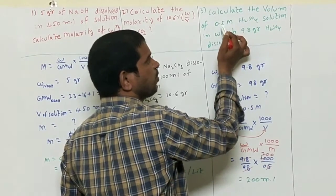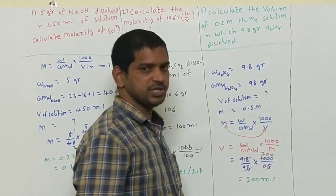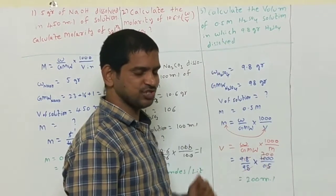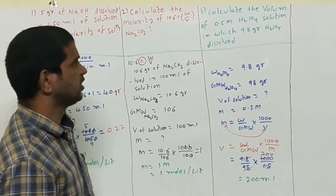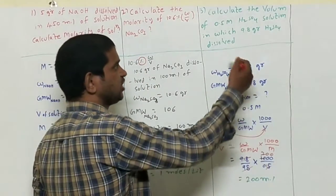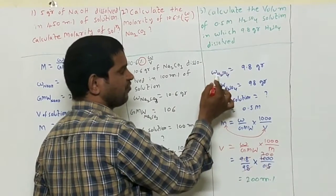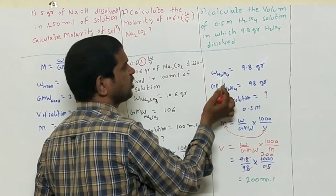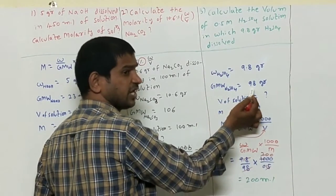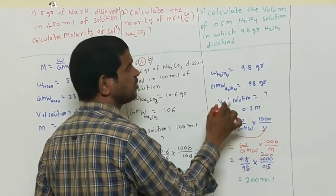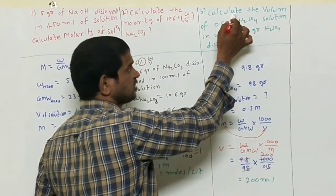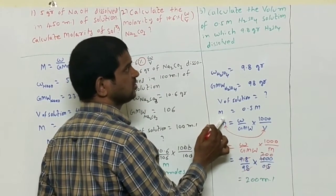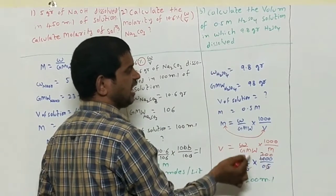In which 9.8 grams of H₂SO₄ — that is sulfuric acid — is dissolved. Again I am writing all the values from the question. The weight of H₂SO₄ is 9.8 grams. The gram molecular weight of H₂SO₄ is 98 grams. The volume of the solution we have to calculate — that is what is asked in the question. The molarity of the solution is 0.5 M.